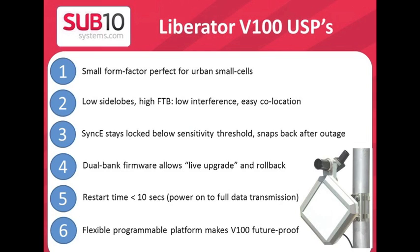The unique selling proposition for Liberator V100: it has a very small form factor, which is perfect for urban deployments. The antenna has very low side lobes and a high front-to-back ratio, which minimizes interference and allows dense co-location of radios.